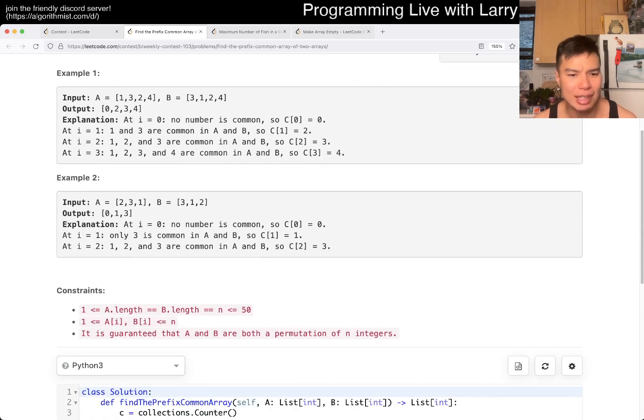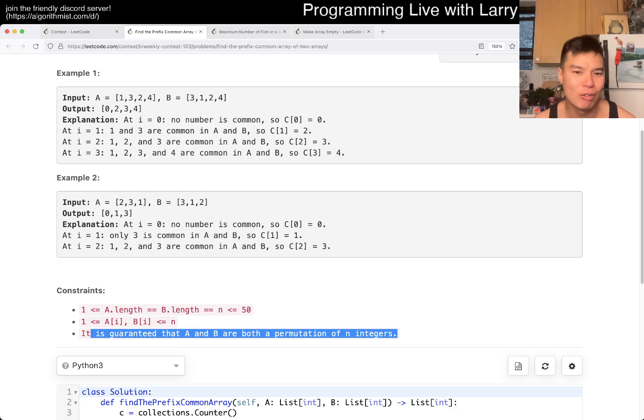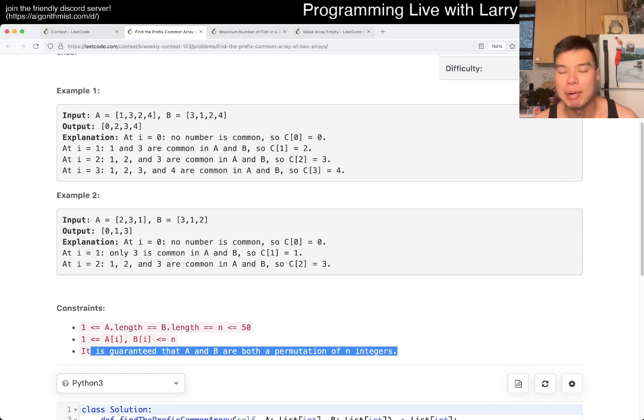So this one, the key thing to note is that the input is just 50, and also permutation. I don't really know why these two constraints need to be, but it is what it is, and it makes it very easy during the contest.